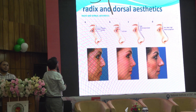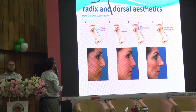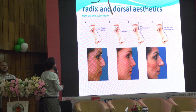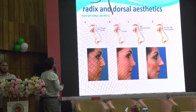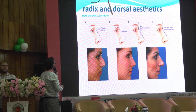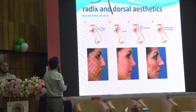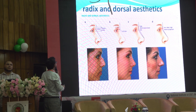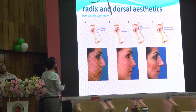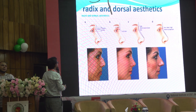Regarding dorsal radix and dorsal aesthetics, the nasofrontal depression — measured from the corneal plane — should be 4 to 9 mm for normal aesthetics. The nasofrontal angle can be an adequate or obtuse angle.